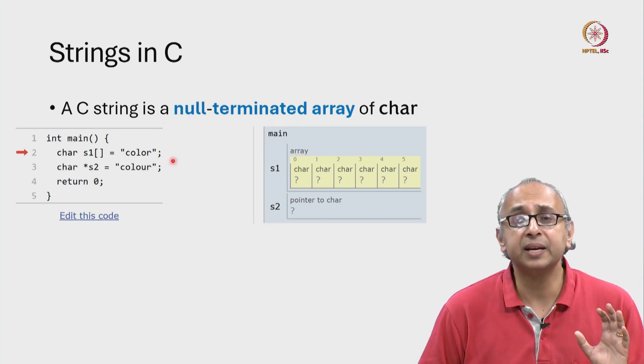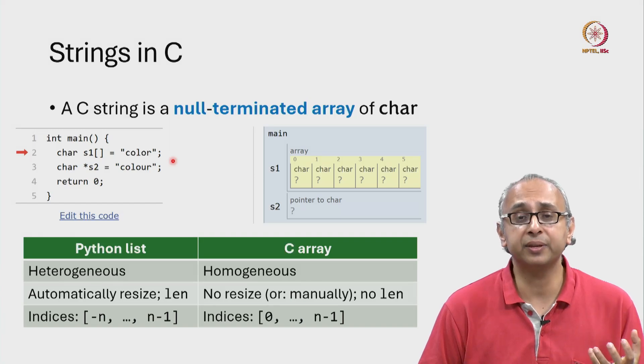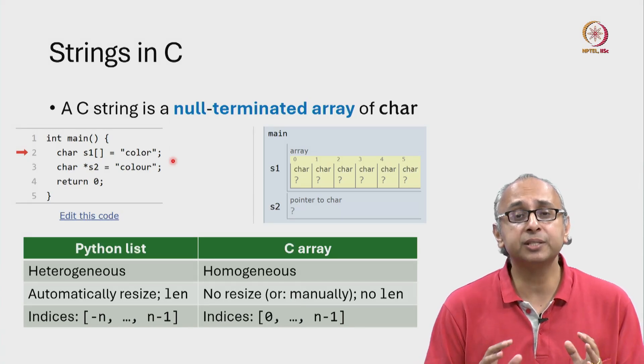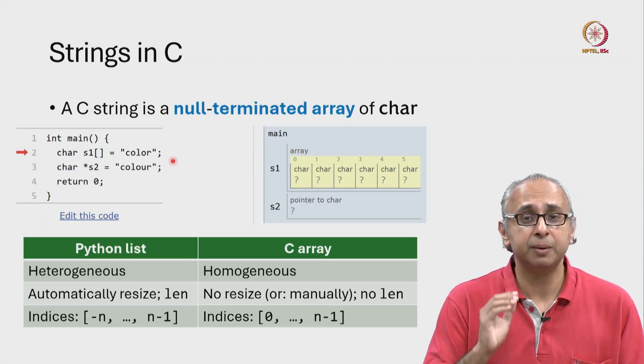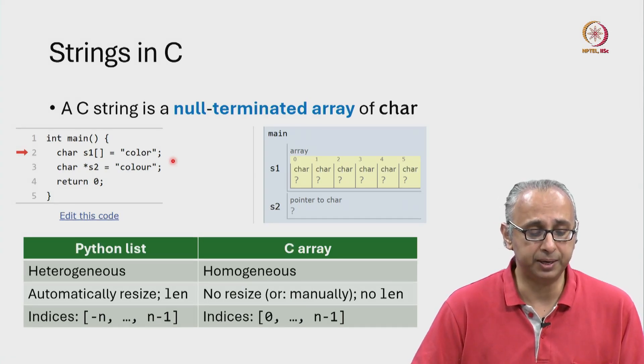So how exactly is a C array different to a Python list? Well it turns out there are many differences but here are the first three most important differences you should keep in mind.